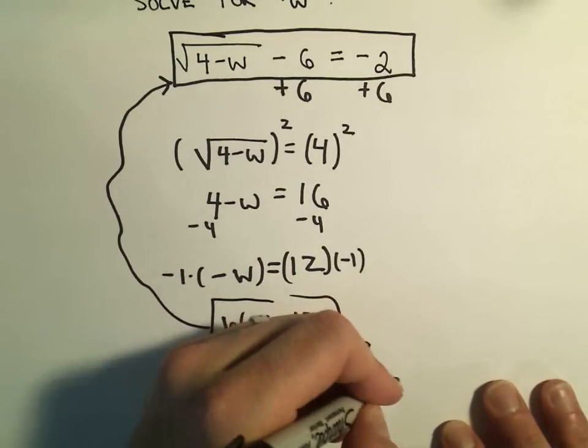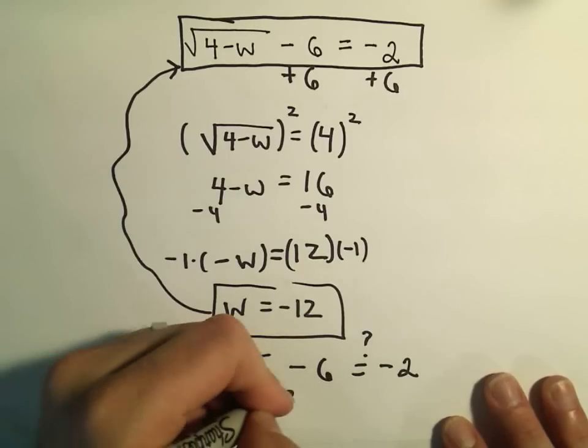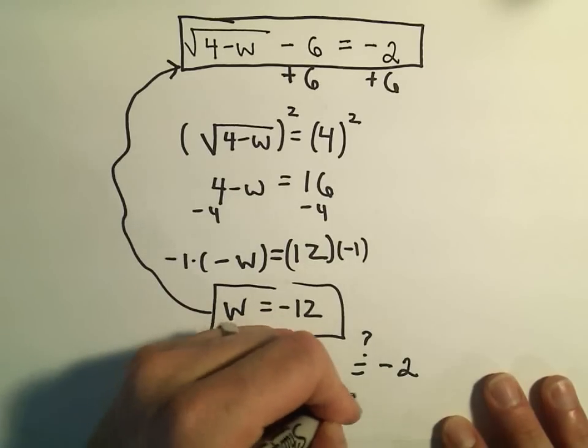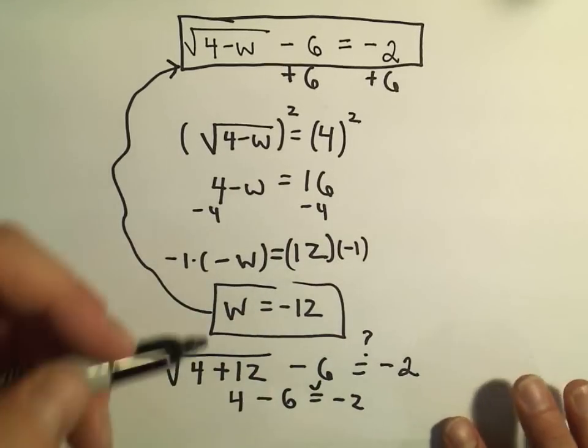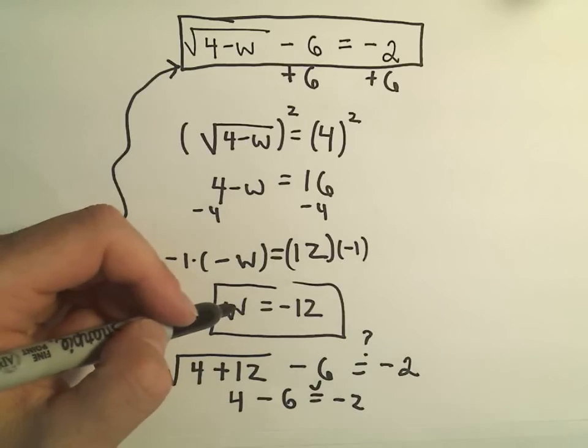And we're asking ourselves, does that equal negative 2? Well, notice 4 plus 12 is 16. The square root of 16 is 4. 4 minus 6 does, in fact, equal negative 2. So this solution, w equals negative 12, is correct. And we found the answer.